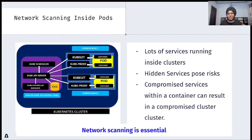Now let's walk into network scanning inside clusters. As you can see, there's a Kubernetes cluster with multiple services running inside containers, which are inside pods. You can see how everything is connected — the Kubernetes API server, kubelet, the pod, and the container. There could be a lot of hidden services which may be overlooked. These services pose a great amount of risk. If a service is compromised within a container, it can result in compromising the entire cluster. This is why network scanning is really essential — to identify services that may be running vulnerable software.